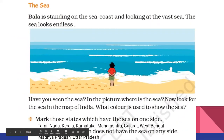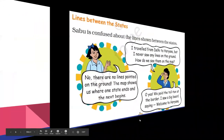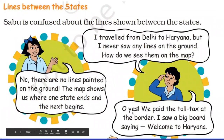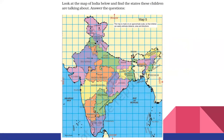Madhya Pradesh and Uttar Pradesh — I have written two. We can write more also, like Rajasthan, Haryana, and other northern states. They don't have sea on any side. Now see the lines between states. If you see the map, there are dotted lines between each state which separate one state from another.